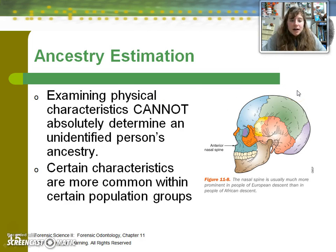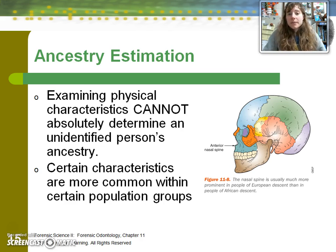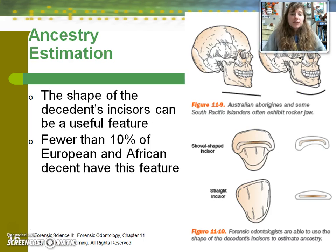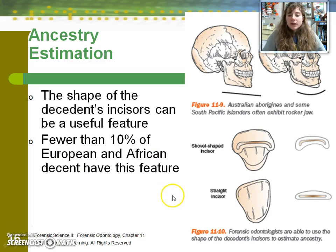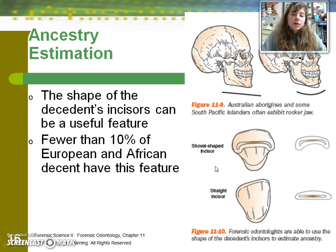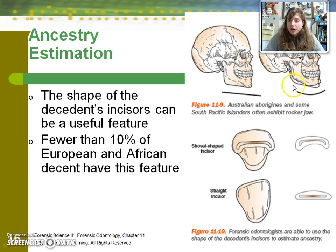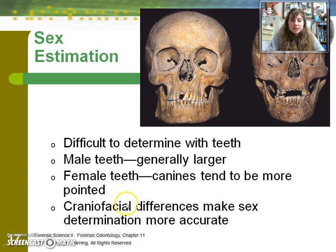When looking at ancestry, it is impossible to say for sure that, based on physical remains, a person was of a particular ethnicity, although there are more common characteristics of certain people groups. The shape of the decedent's incisors can be helpful. A straight incisor is more typical of European and African individuals, whereas shovel-shaped incisors are more common in Mongoloid populations — specifically Australian Aborigines and South Pacific Islanders, along with the rocker jaw.